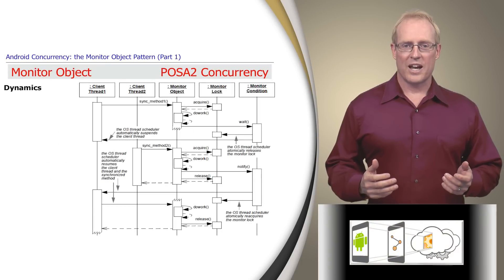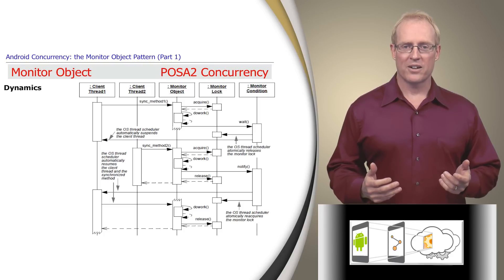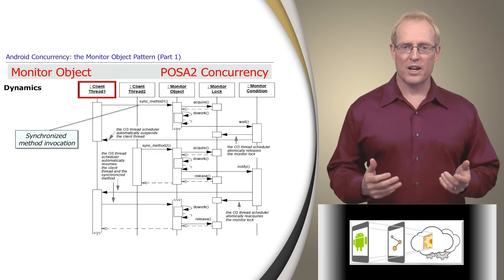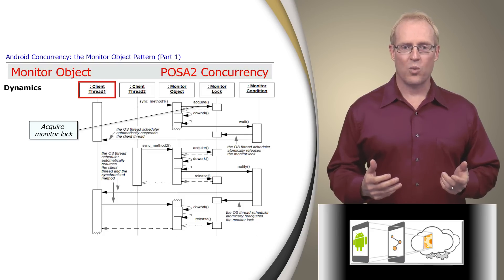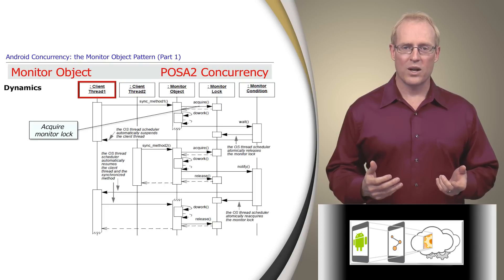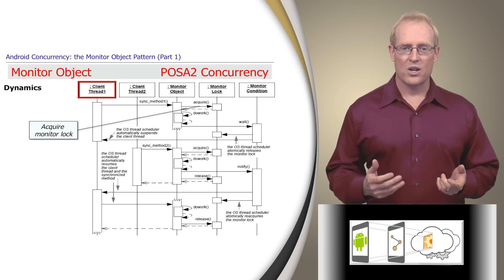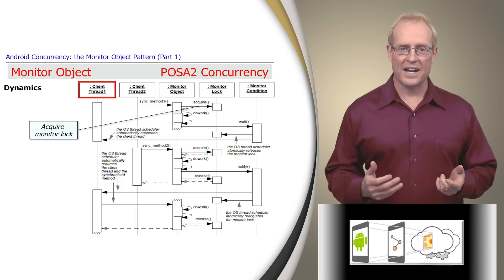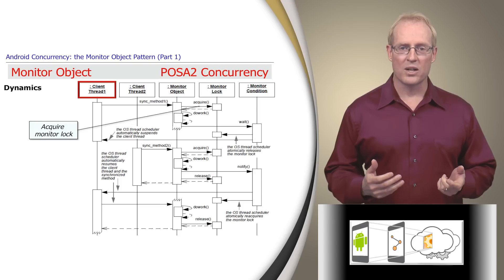This UML sequence diagram shows the dynamic interactions between participants in the monitor object pattern. When thread T1 invokes a synchronized method on a monitor object, the method must first acquire the object's monitor lock. A monitor lock can't be acquired as long as another synchronized method in thread T2 is executing within the monitor object, so client thread T1 will block until the lock is acquired. After the synchronized method called by T1 finishes executing, the monitor lock is released so other synchronized methods called by other threads can access the monitor object. For example, if thread T1 calls the synchronized take method on a LinkedBlockingQueue, it will block until it can acquire the take lock.